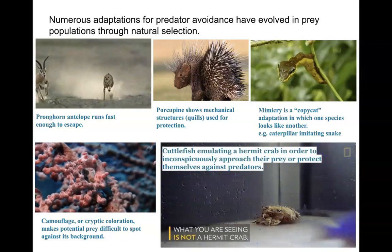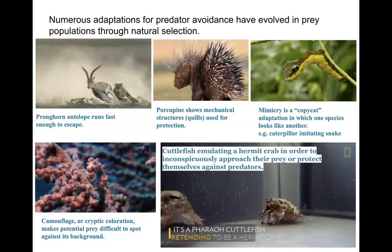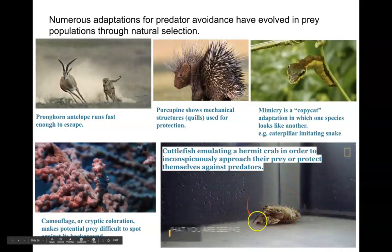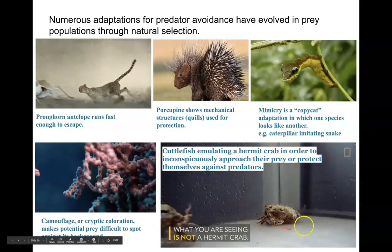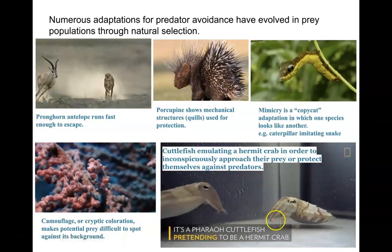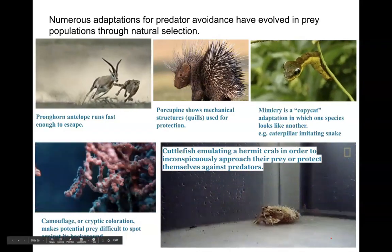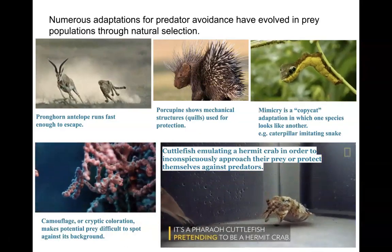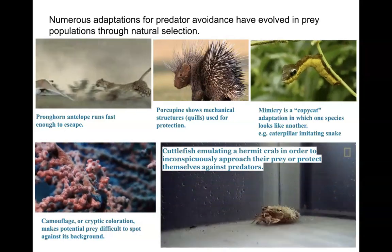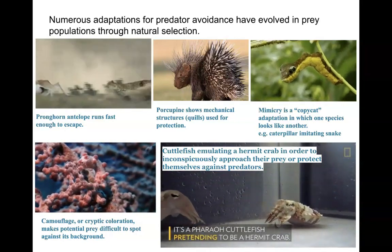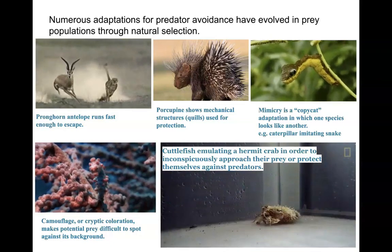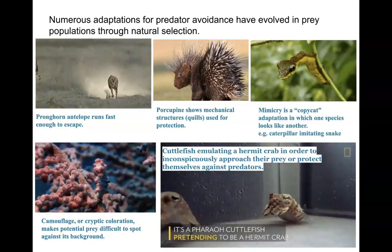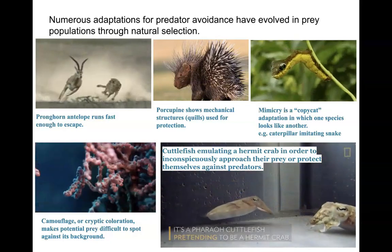Cuttlefish are really neat creatures. This is what a cuttlefish normally looks like, but at the beginning of the video it looked like a hermit crab — look at that mimicry. Then when it realizes it's another cuttlefish and not a predator, it changes back into its cuttlefish form. Cuttlefish emulate another organism to ward off predators or protect themselves. They can also use this to approach prey — the prey isn't alerted because it thinks it's a hermit crab, not a cuttlefish.